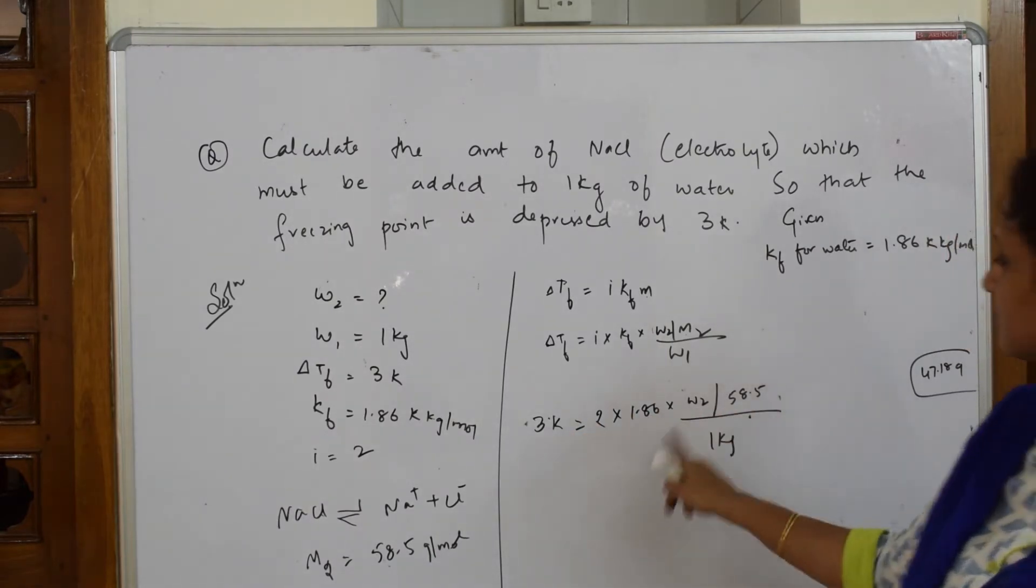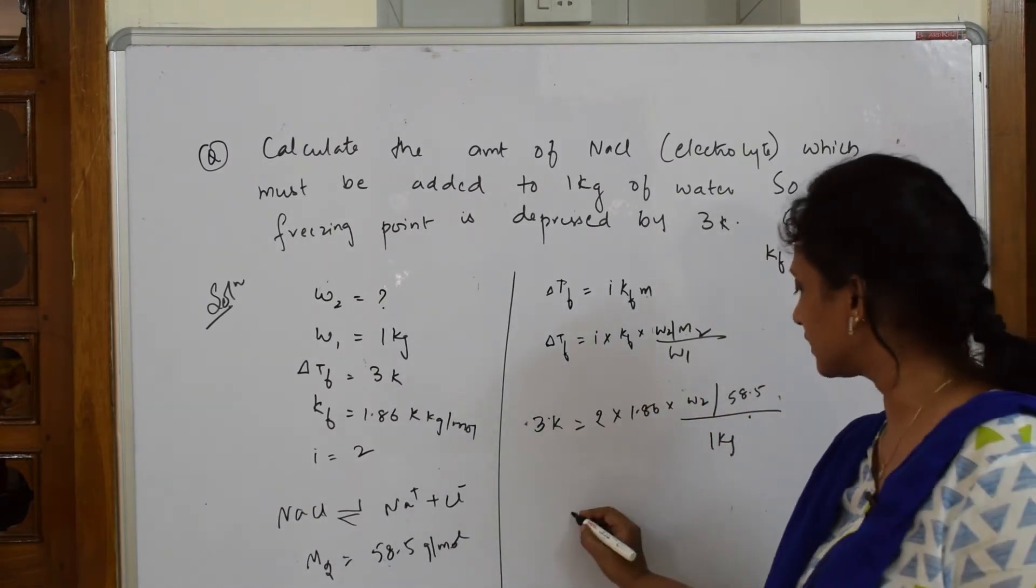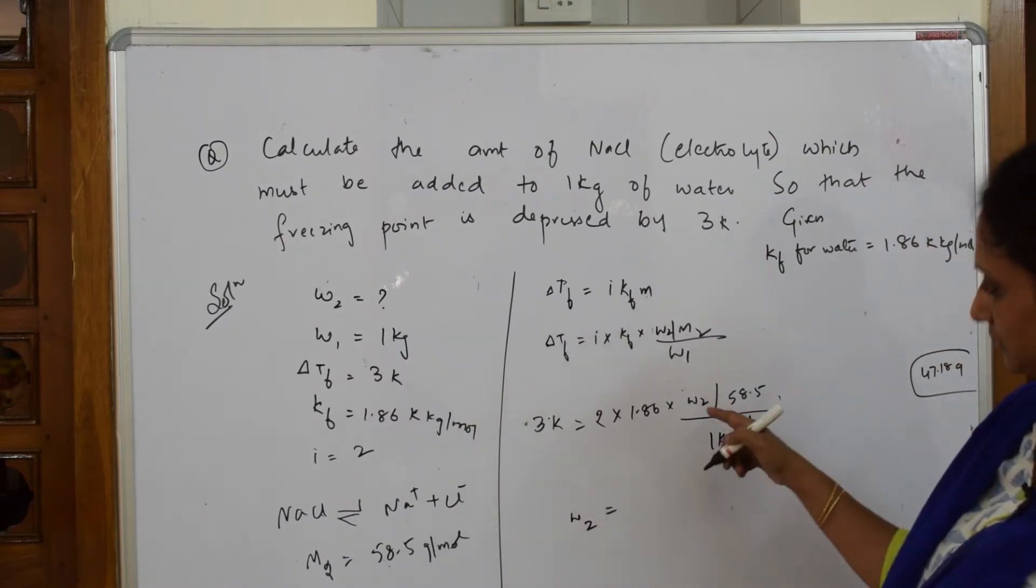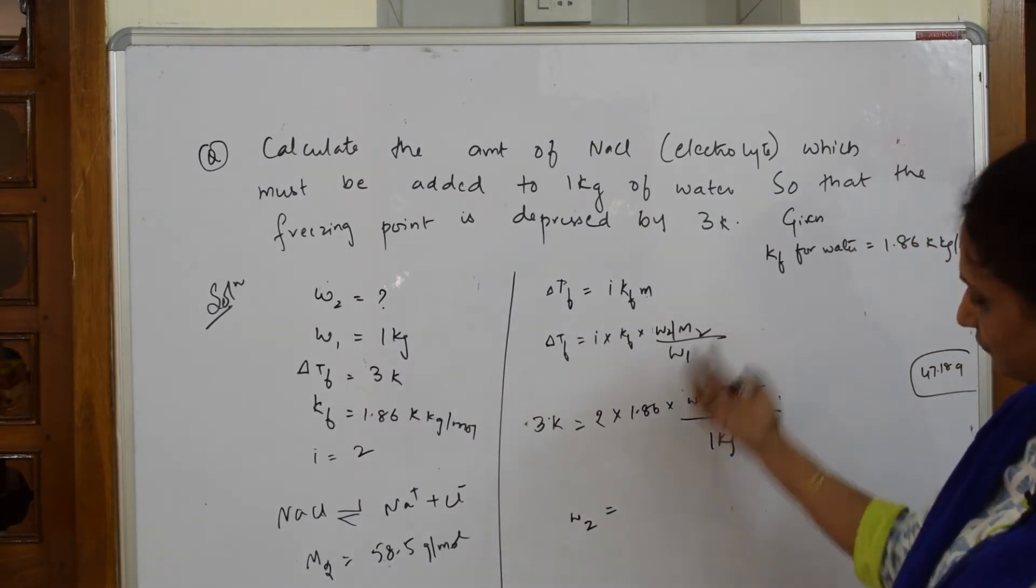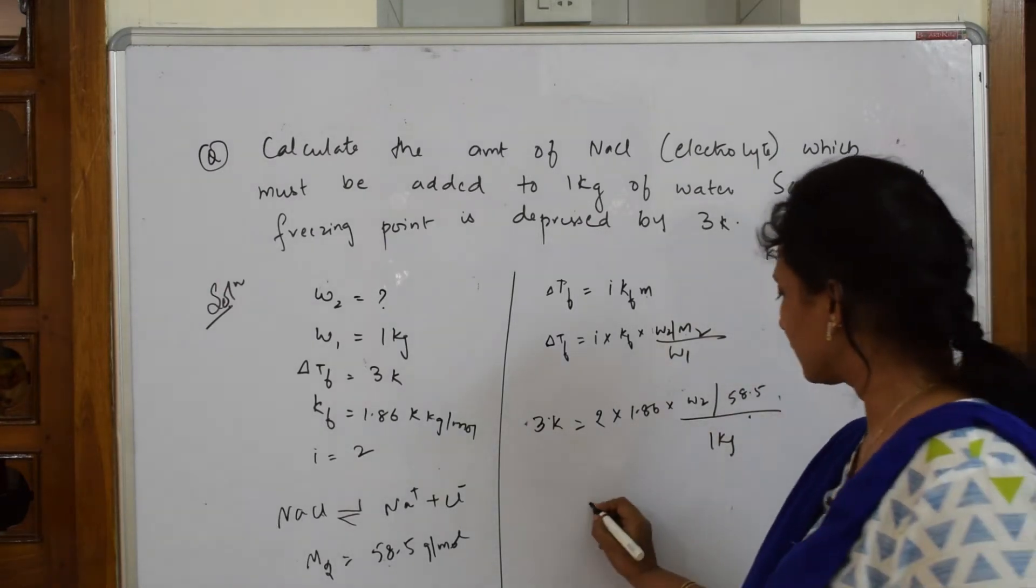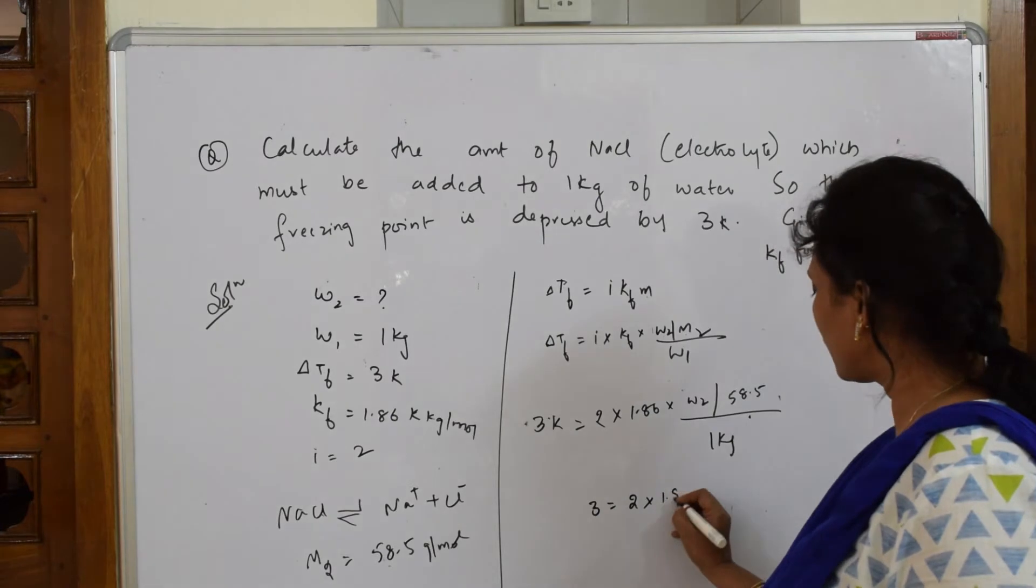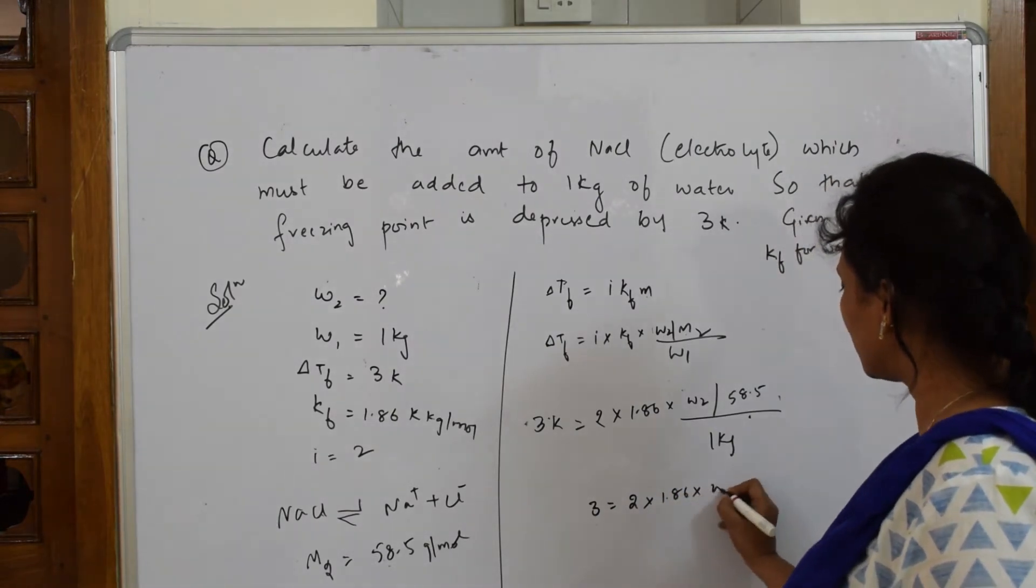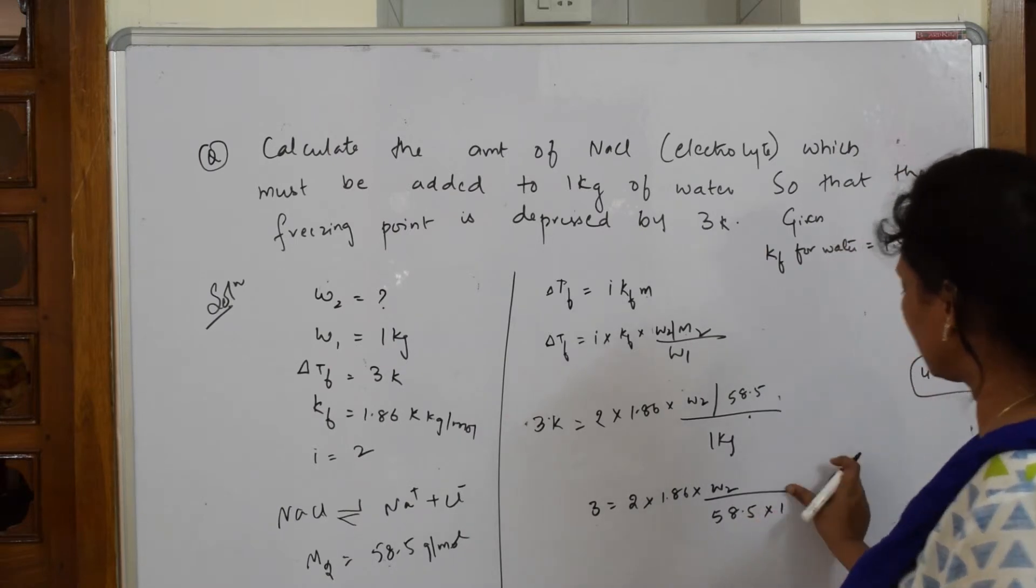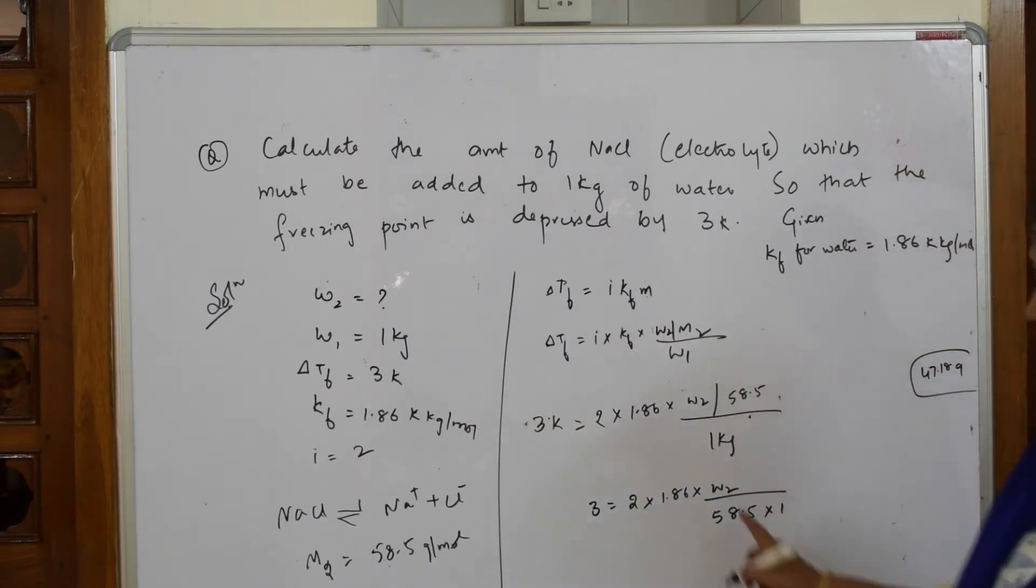I can easily take out this entire w2. Further, we will make it more simpler for you all. So 3 is equal to 2 into 1.86 into w2 by 58.5 into 1. I think this is more easier now.